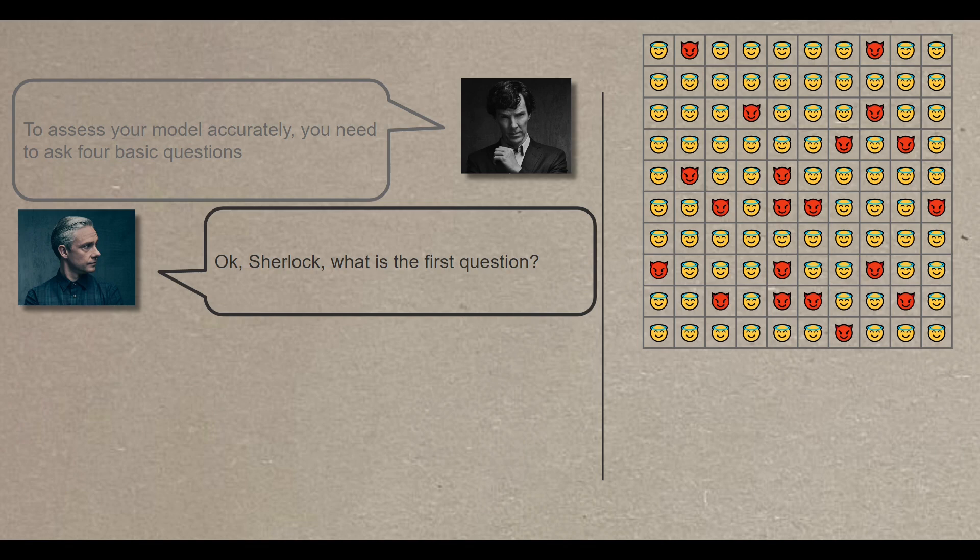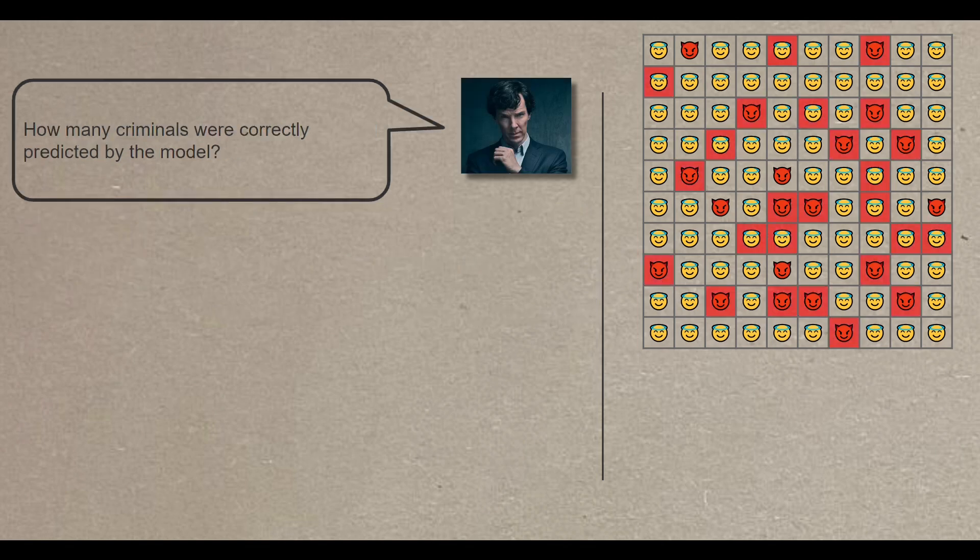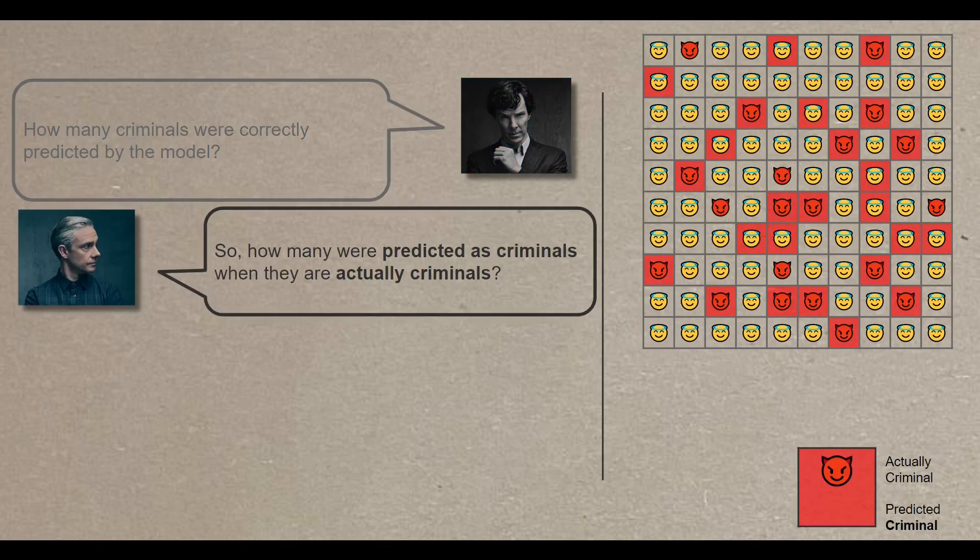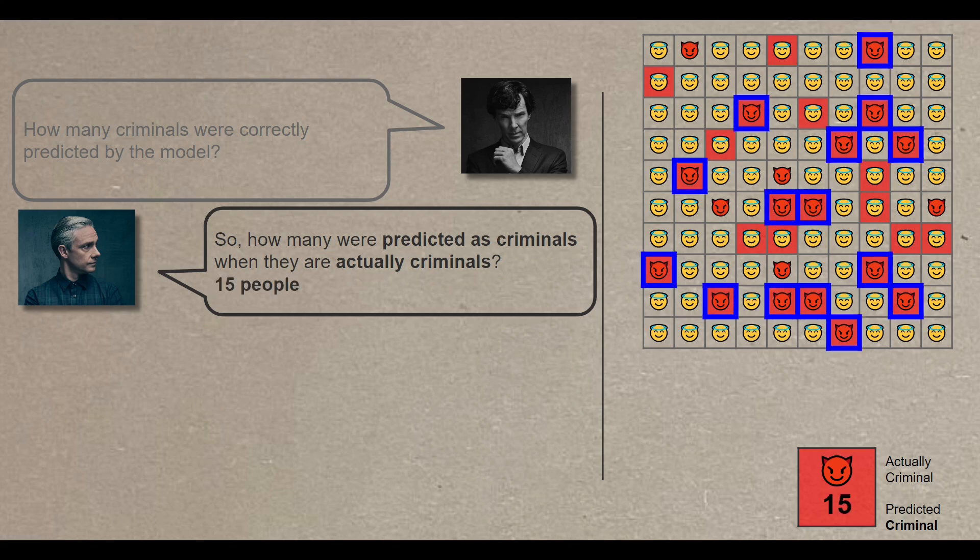Okay Sherlock, what is the first question? How many criminals were correctly predicted by the model? So how many were predicted as criminals when they are actually criminals? Let me count, that would be 15 people. Just as a side note, sometimes this is referred to as true positive. True because the prediction aligns with reality, red shade, red emoji, and positive because the prediction affirms that the person is a criminal.